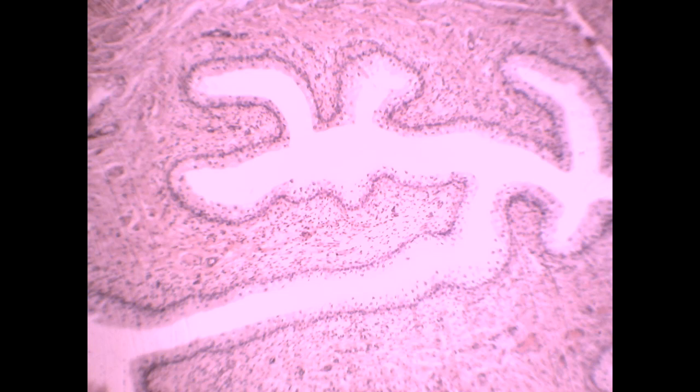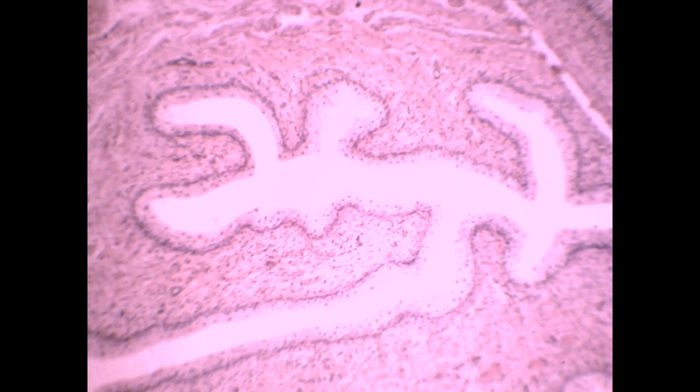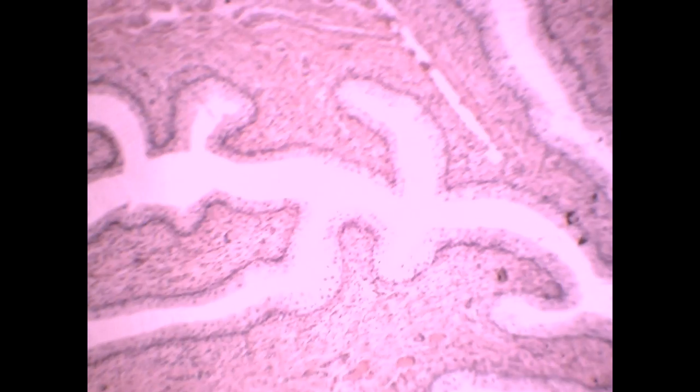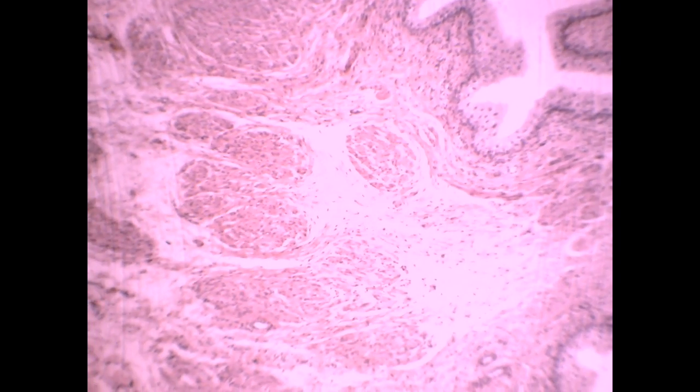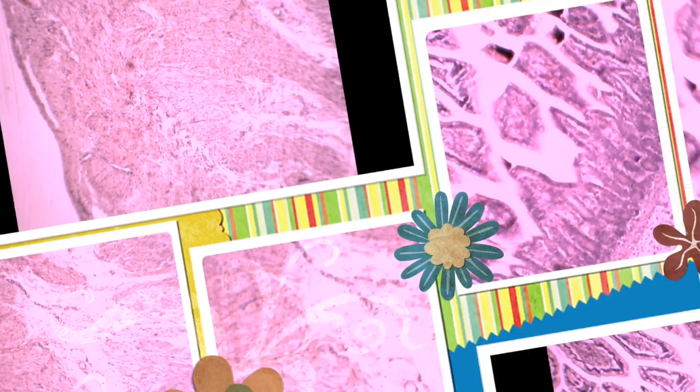This is the ureter. And the second one is the larger hollow, lined also by transitional epithelium with rounded nuclei at the top. And the wall is formed mainly of the muscle, found in three bundles. Inner, in the form of circles. Middle, in the form of the spindle.